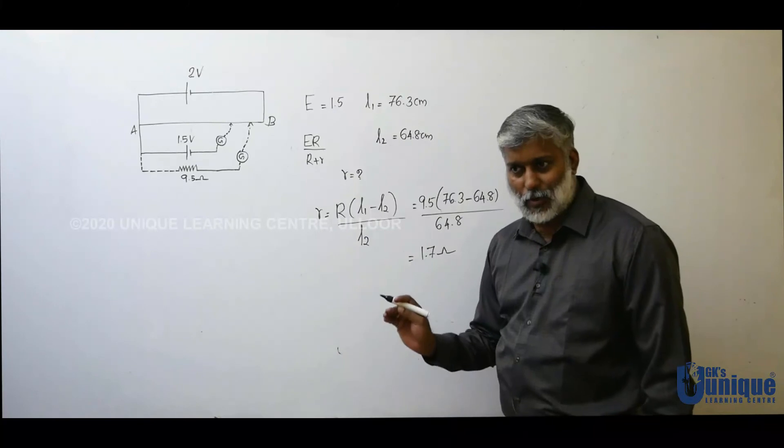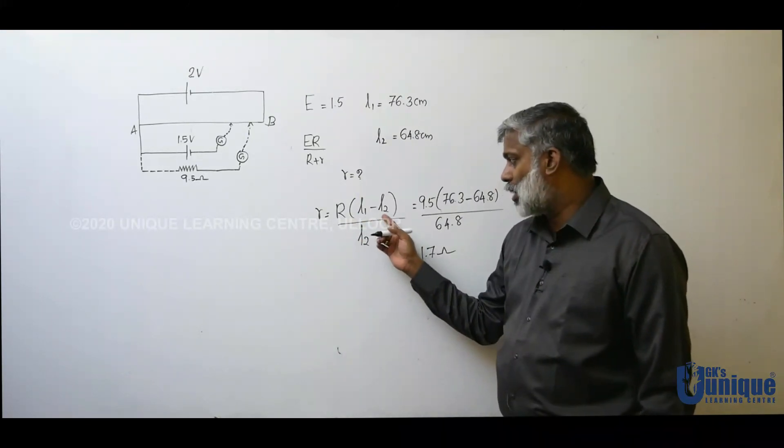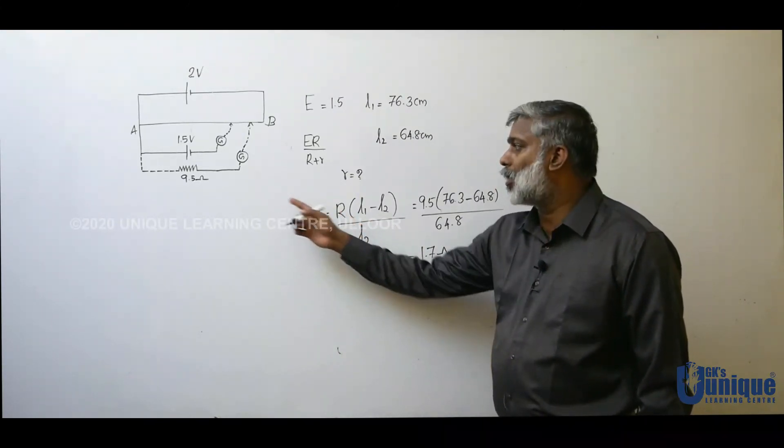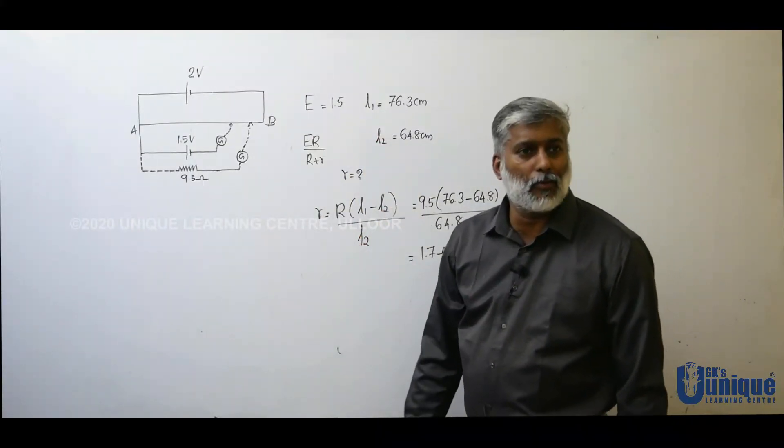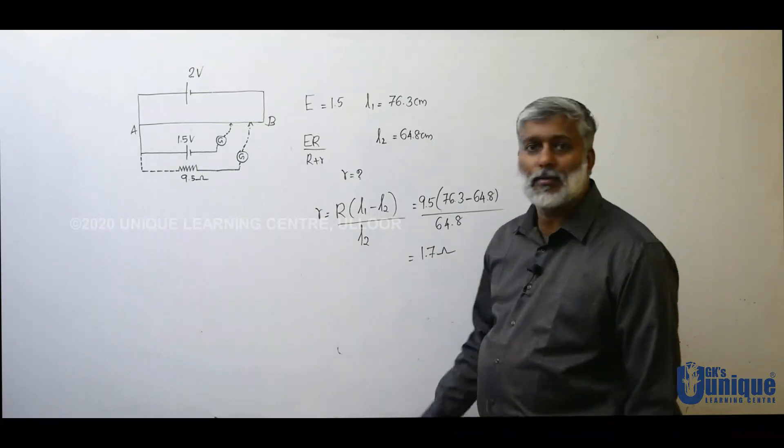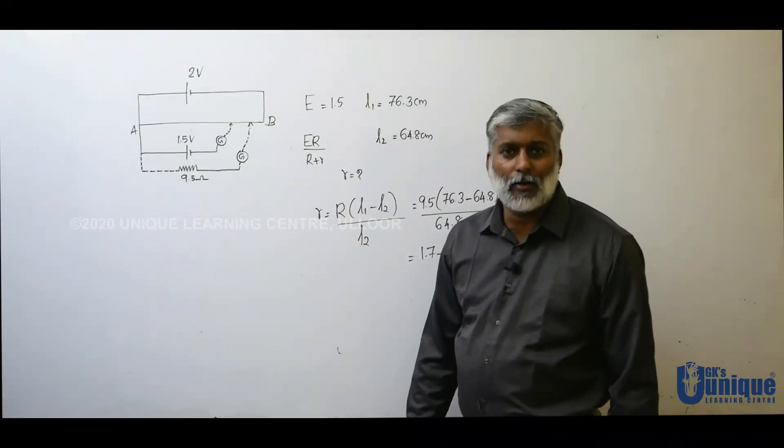I am going to write the formula. Small r is equal to R times L1 minus L2 divided by L2. Capital R is 9.5, first length L1, second length L2. You plainly put the values, you will get your result.